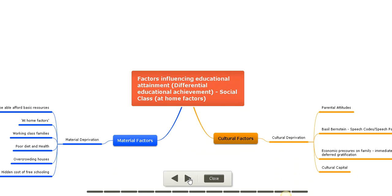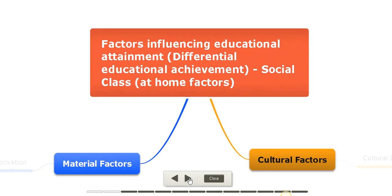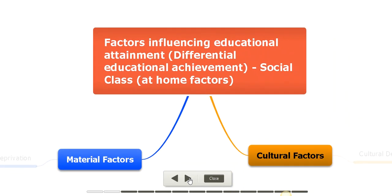So, which makes the upper class and middle class perform better at school compared to the working class family? We have two explanations for this: we have material factors and we have cultural factors, which influence the educational achievement of different social classes.